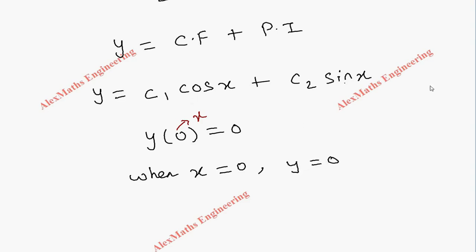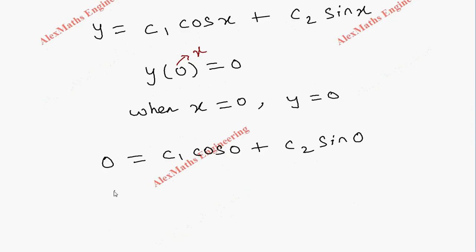I am going to substitute this into the solution. So y = 0 gives us: 0 = c1·cos(0) + c2·sin(0). From this, cos(0) = 1, so we are left with c1. And sin(0) = 0, so that term is 0.